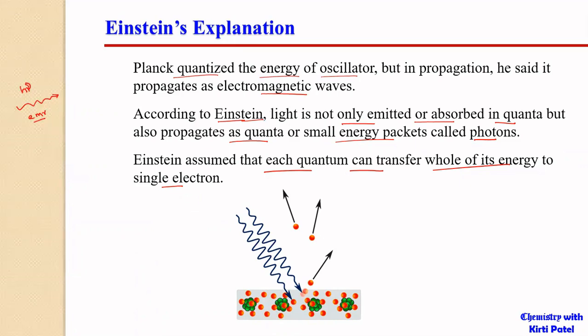When the radiation is absorbed by an electron and if the frequency of radiation is appropriate — that is, if frequency is more than the threshold frequency — the electron is emitted, and this process can be instantaneous. The electron does not need to wait for another fraction of a quantum; hence the instantaneous nature is explained.